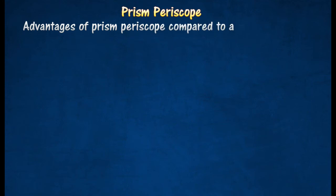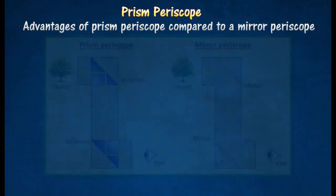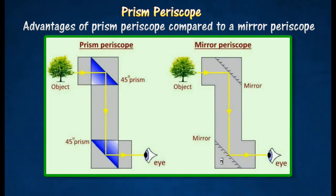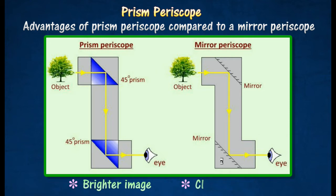Advantages of a prism periscope compared to a mirror periscope: The image of the prism periscope is brighter than that of a mirror periscope, because all light energy is reflected. The image is also clearer, because there is no overlapping of images.